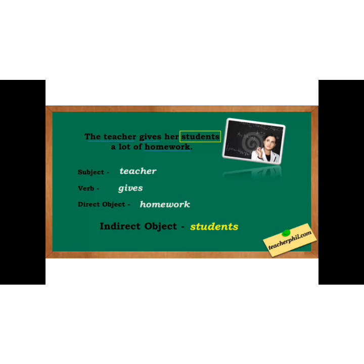For example: 'The teacher gives her students a lot of homework.' Here our subject is 'teacher', verb is 'gives', direct object is 'homework', and indirect object is 'students'. We make a question: 'For whom does the teacher give homework?' Our answer is 'students', therefore it is the indirect object. I hope you understood, students.